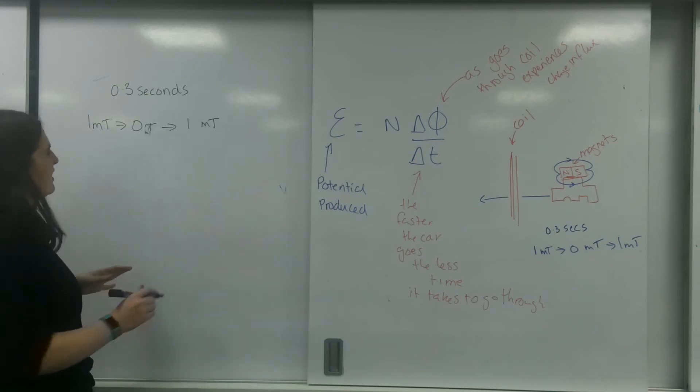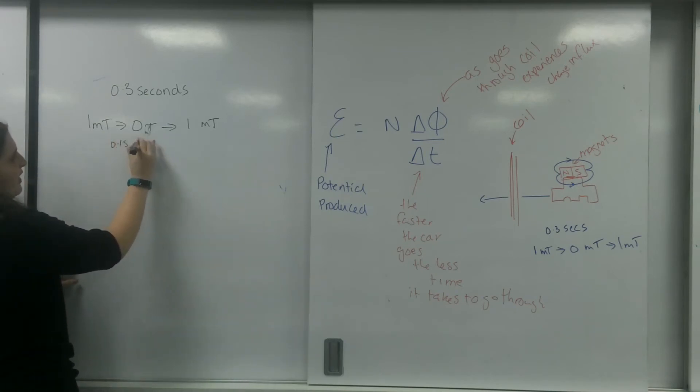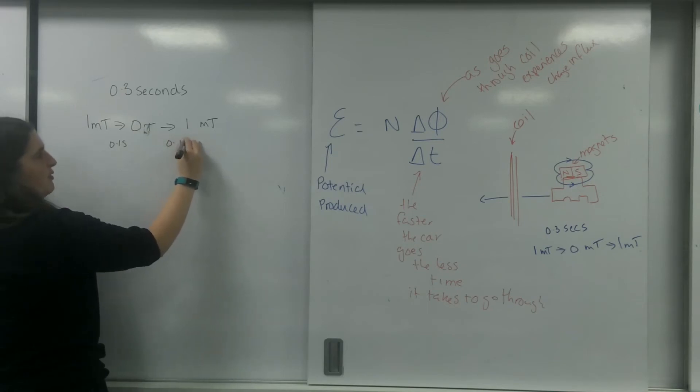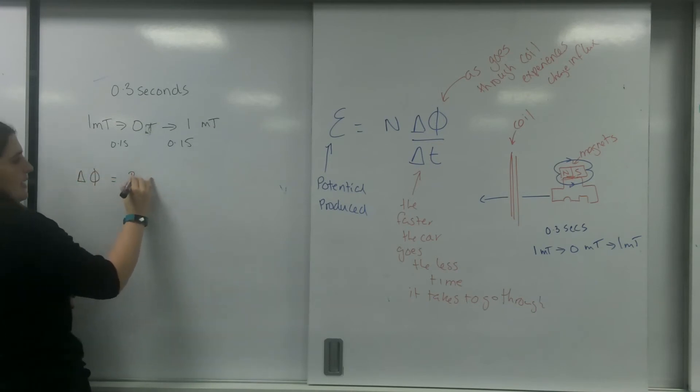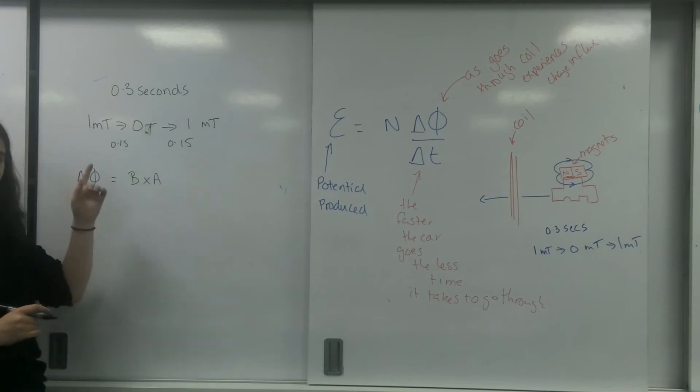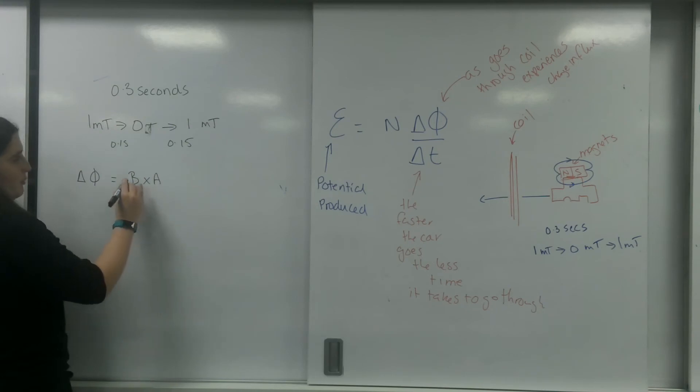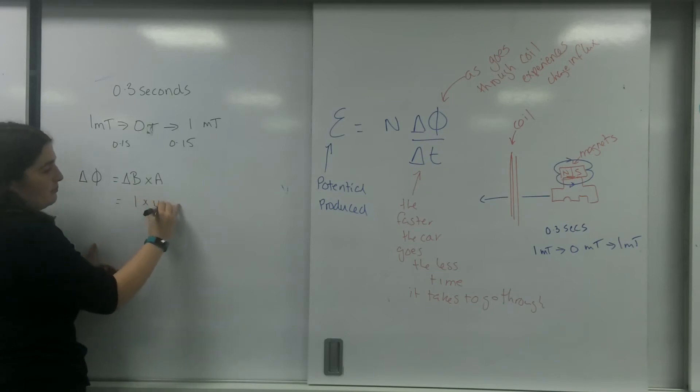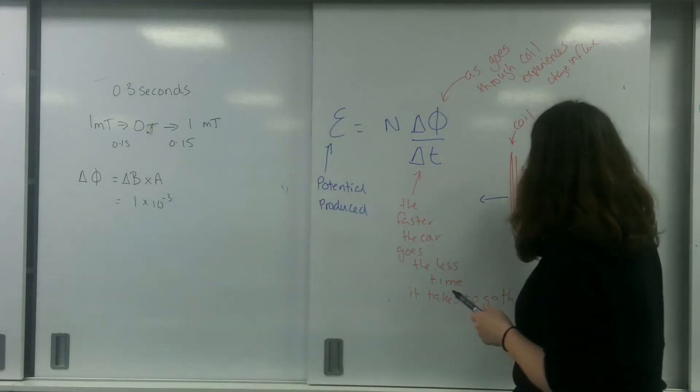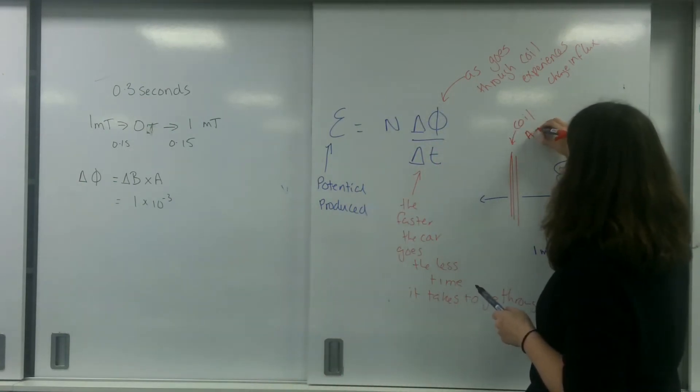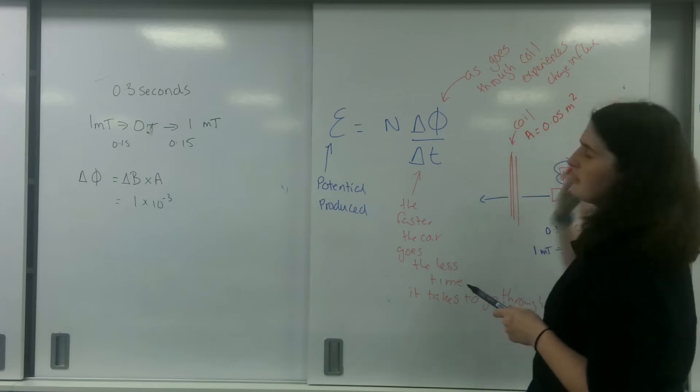I'm going to assume that it takes 0.15 to get halfway and then 0.15 to get to the other. So my change in my flux is B times A. And the biggest change I have is going from 1 to 0. So my magnetic field strength, my change in magnetic field strength, is 1 times 10 to the minus 3. Let's say that this has an area of 0.05 metres squared.